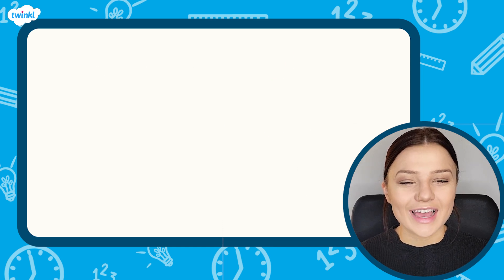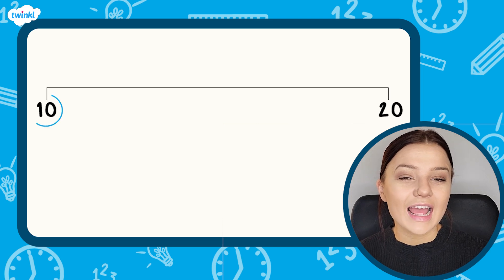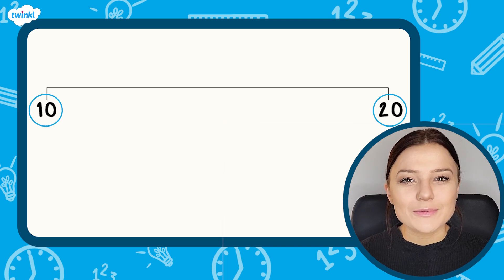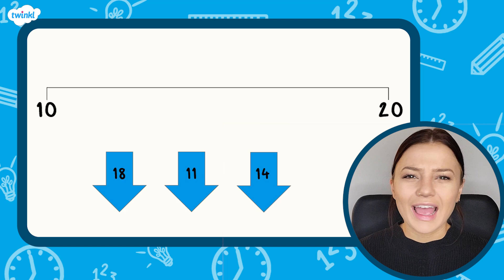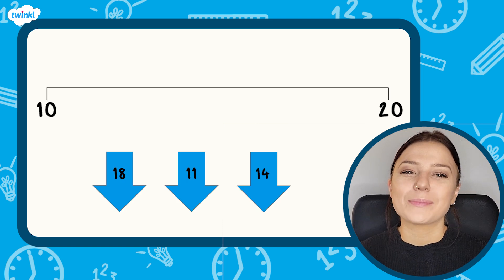Now it's your turn. Here is another number line. This number line starts with 10 and ends with 20. Can you estimate where each of these other numbers will go? And can you explain how you know? Pause the video here and press play when you're ready.